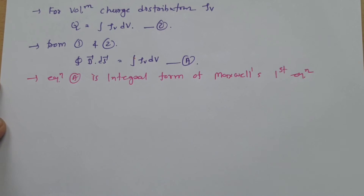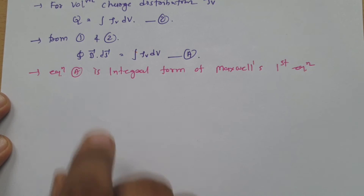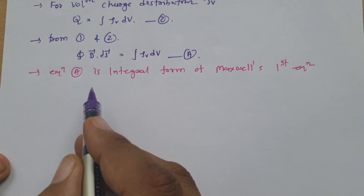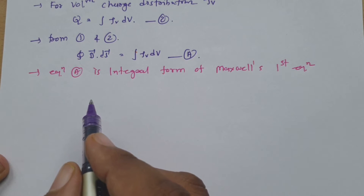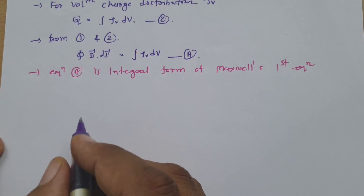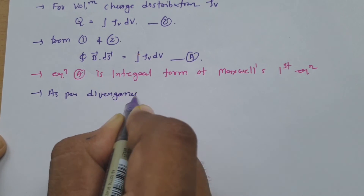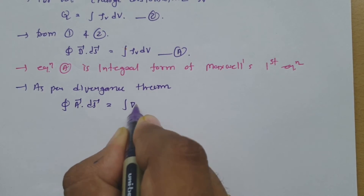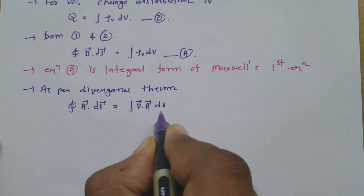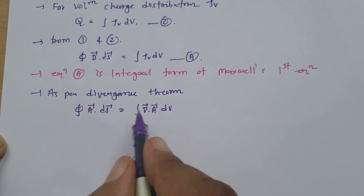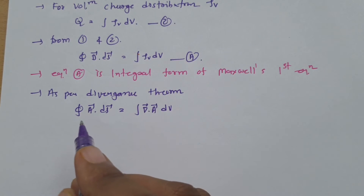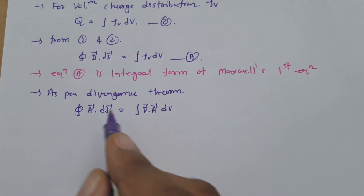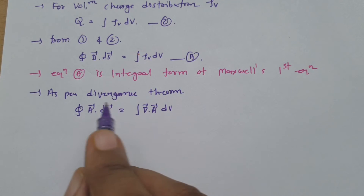Now I will derive the differential form of Maxwell's first equation. I have already explained to you the divergence theorem. The divergence theorem explains the relationship between surface integration and volume integration. As per the divergence theorem, the enclosed surface integration of any vector is equals to the divergence of the volume integration of that vector. Divergence theorem explains the relationship between surface integration and volume integration.